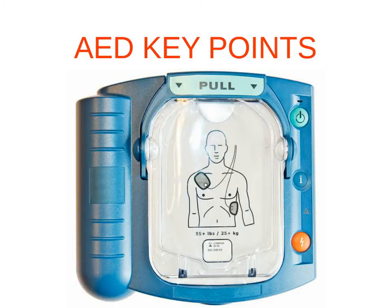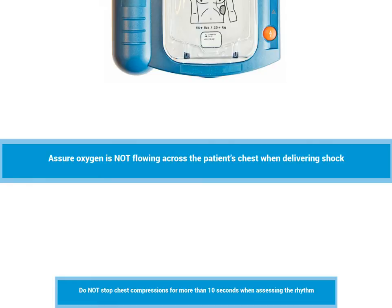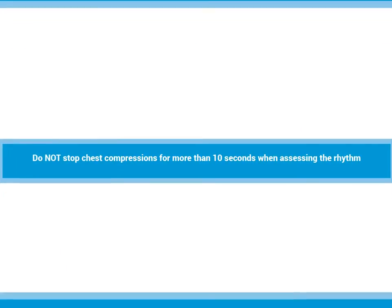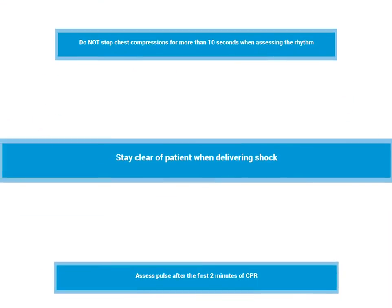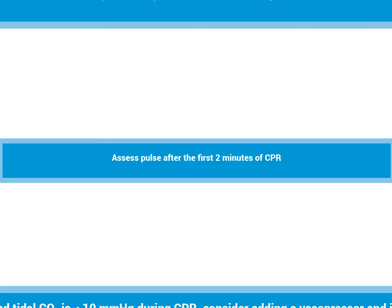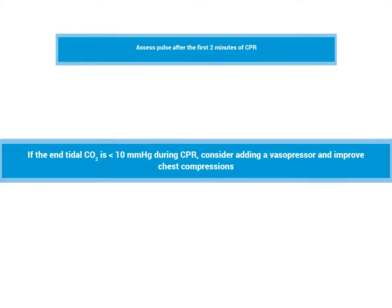We'll discuss the key points of an AED. When delivering a shock, make sure oxygen is not flowing across the patient's chest. Do not stop chest compressions for more than 10 seconds to analyze the rhythm. Have everyone stay clear when delivering a shock. Assess the pulse after the first two minutes of CPR. If the end-tidal CO2 is less than 10 mmHg during CPR, consider adding a vasopressor and improve chest compressions.